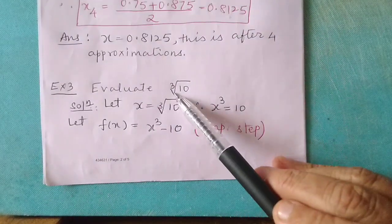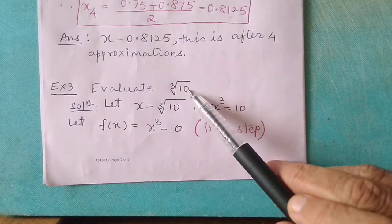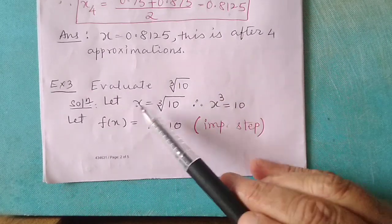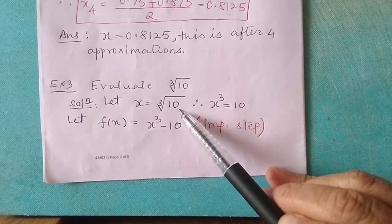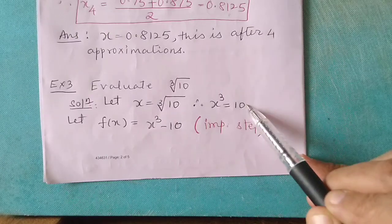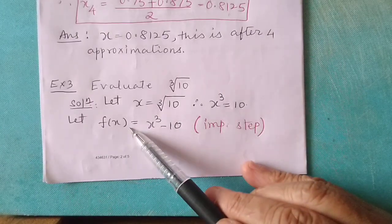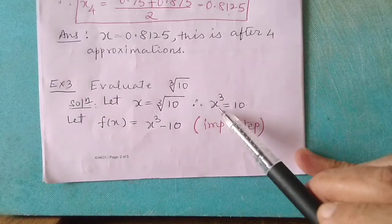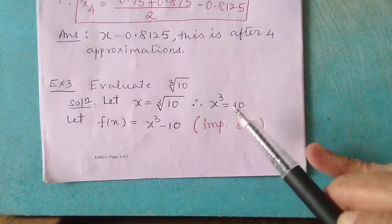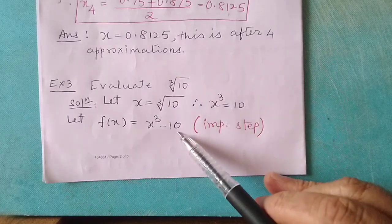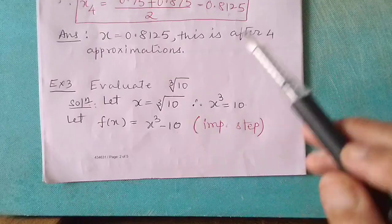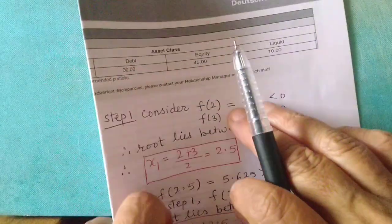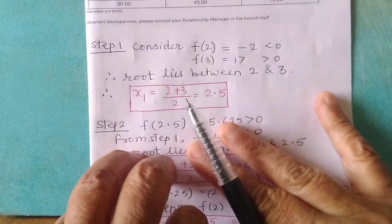Next example: evaluate cube root of 10. Let x equal cube root of 10, so x cube equals 10. Therefore, f of x will be x cube minus 10 equals 0. We need to find a value of x that makes this equation equal to 0. Step one: we need to find two roots.